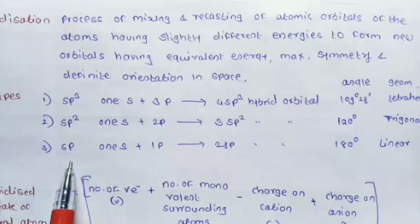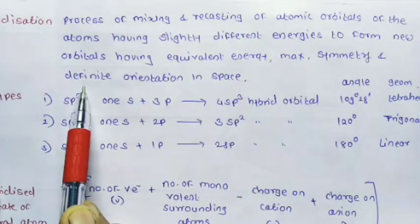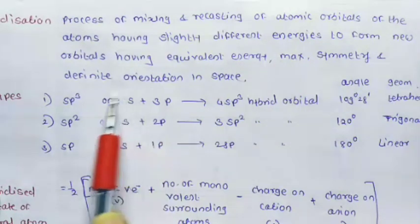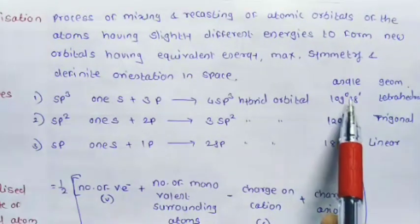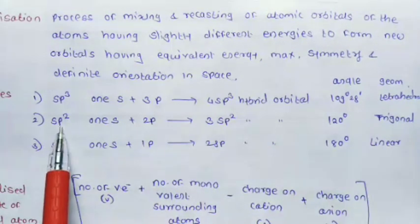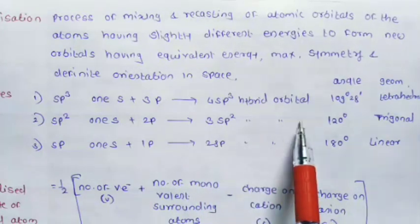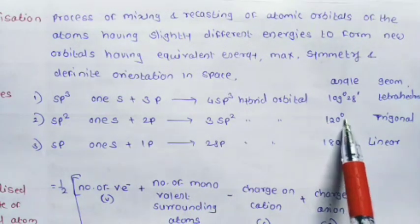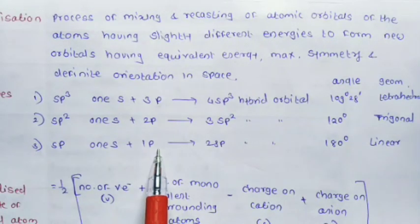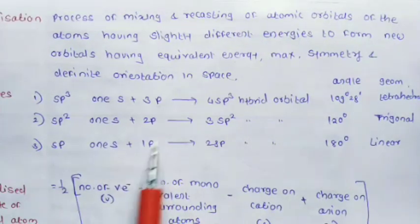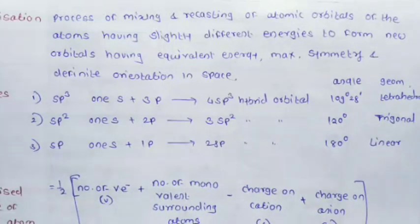Hybridization is of three types: SP3, SP2, and SP hybridization. SP3 hybridization: one S orbital plus three P orbitals combine to form four SP3 hybrid orbitals. Bond angle in SP3 is 109 degrees 28 minutes. SP2 hybridization: one S orbital and two P orbitals combine. Bond angle is 120 degrees and geometry is trigonal planar. SP hybridization: one S orbital plus one P orbital combine. Bond angle is 180 degrees and geometry is linear.